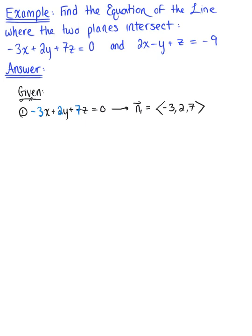Our second plane is defined as 2x minus y plus z is equal to negative 9. So again, looking at the coefficients of our variables, we can identify the normal vector. The normal vector of the second plane, vector n sub 2, is a vector with the components 2, negative 1, 1.